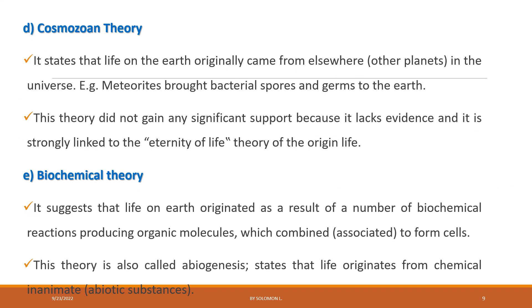The fourth theory is the cosmozoal theory of origin of life. This theory states that life on earth originally came from elsewhere, especially from other planets in the universe. For example, meteoroids brought bacterial spores and germs to the earth. This theory did not gain significant support because it lacks evidence and is strongly linked to the eternity of life concept.